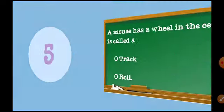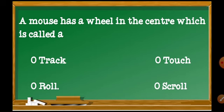Question number 5: A mouse has a wheel in the center which is called a — A) Track wheel, B) Touch wheel, C) Roll wheel, D) Scroll wheel.